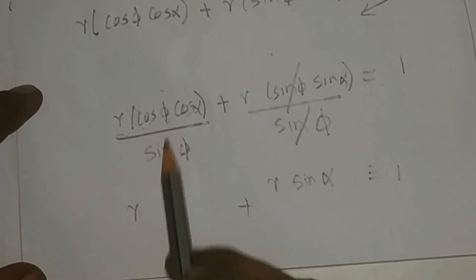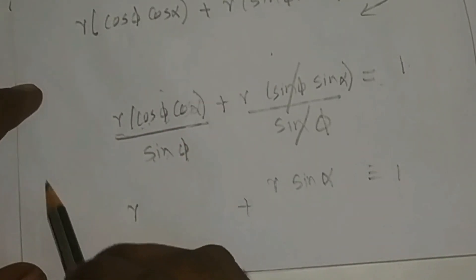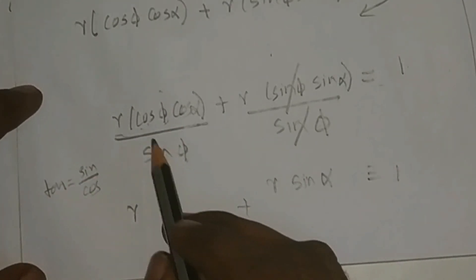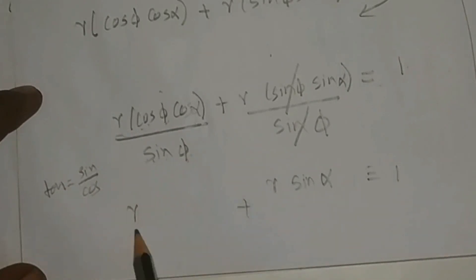See here, cos α by sin α. What is tan? tan = sin / cos. So here, cos φ / sin φ, that is 1 / tan, which is cot φ and cos α.